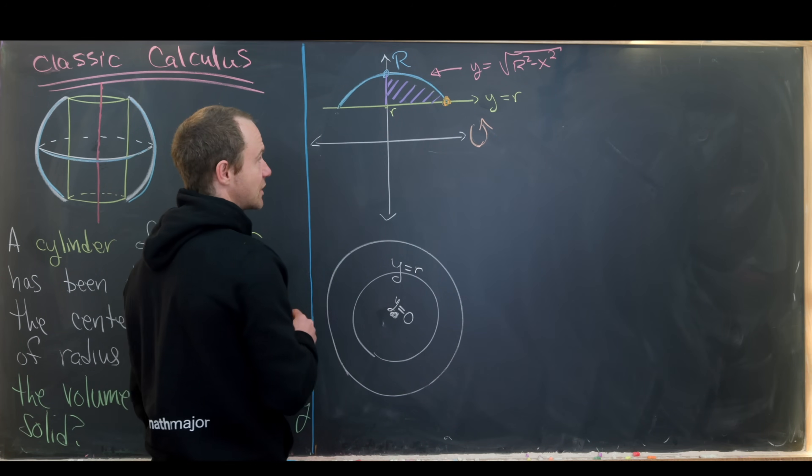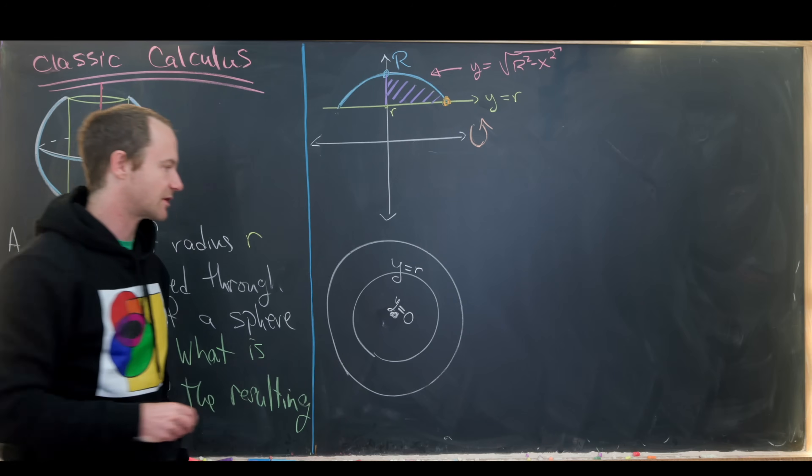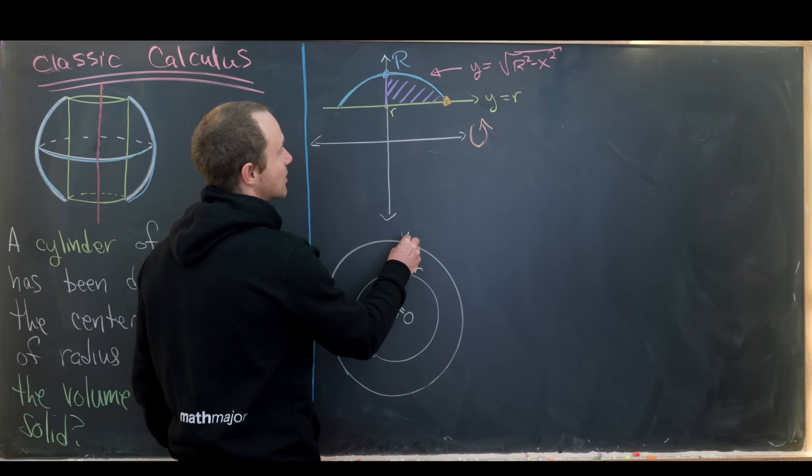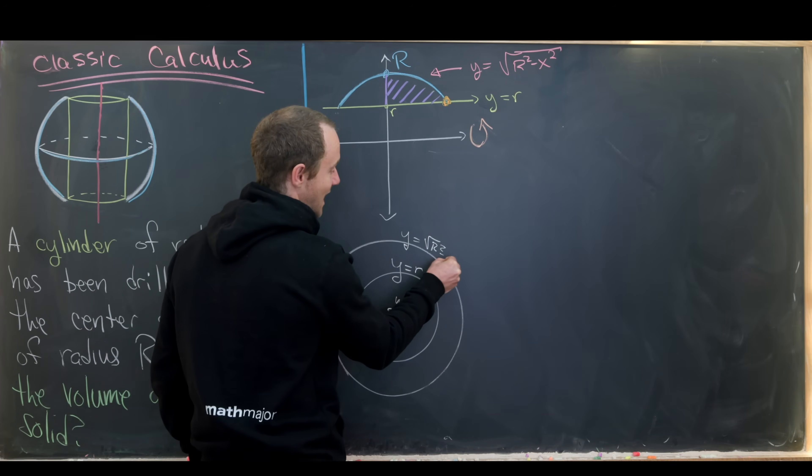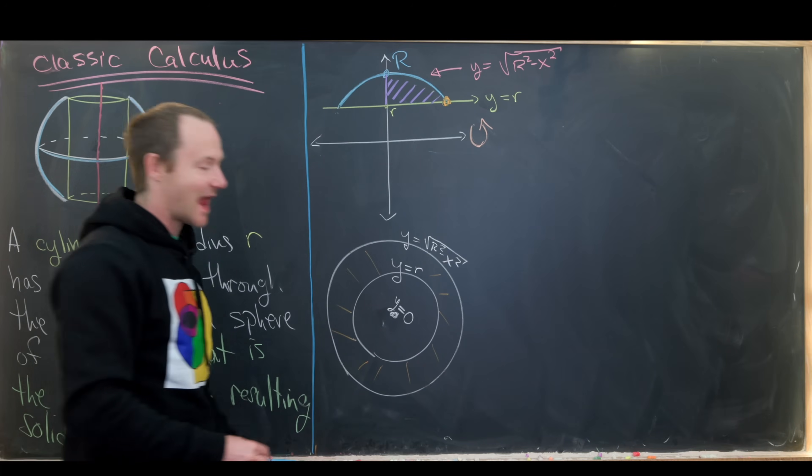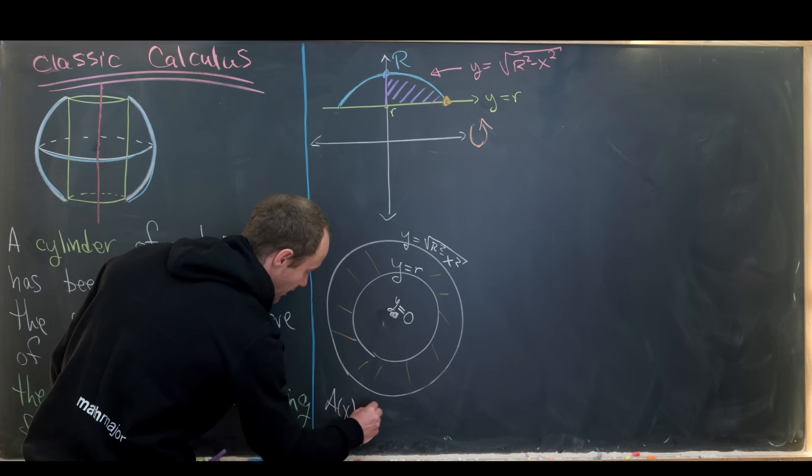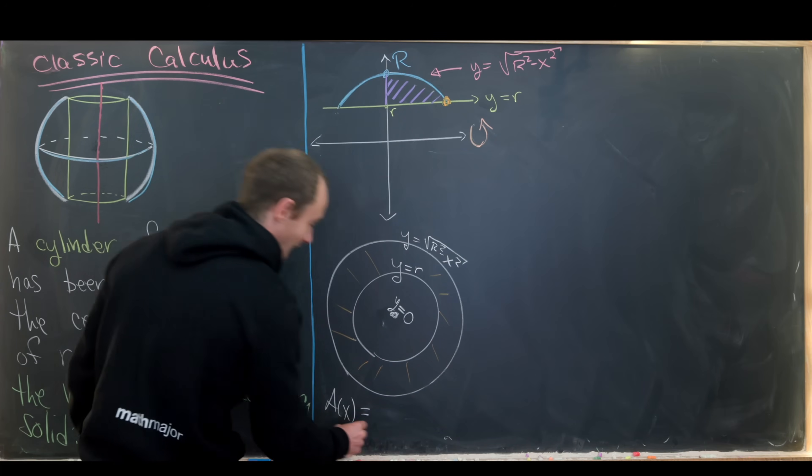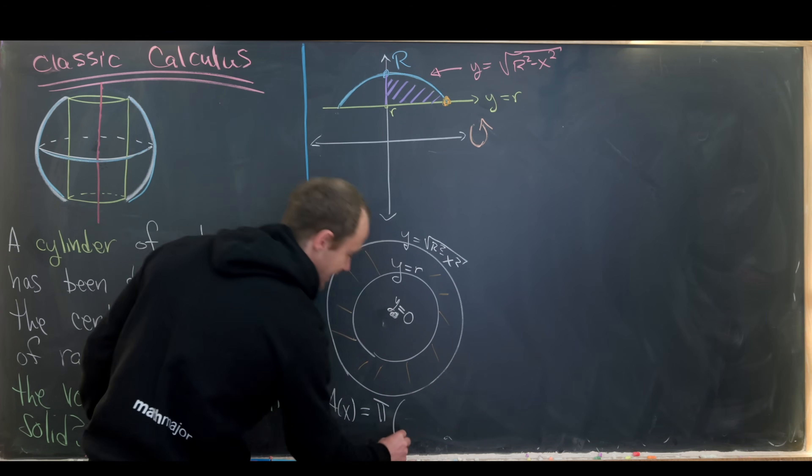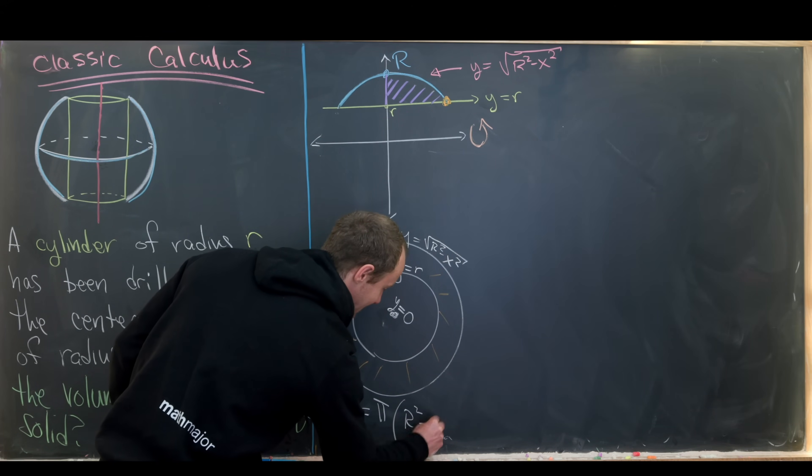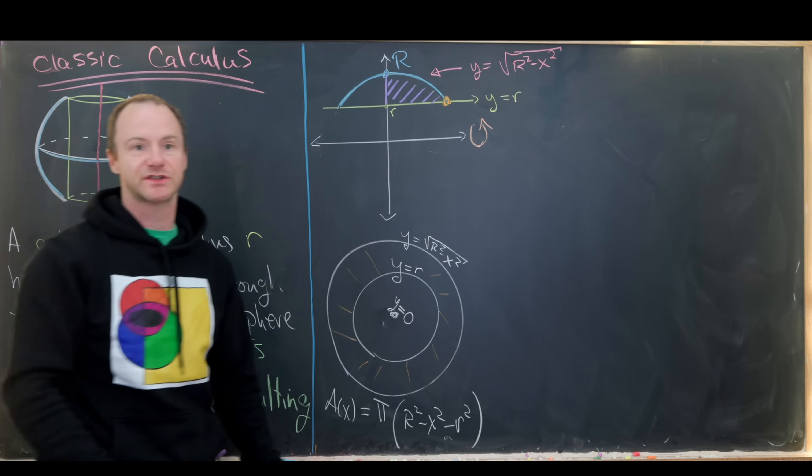And then the first curve that I encounter is y equals r. I know that's the first curve I encounter because if I stand along this axis and look out, I see the cylinder first. And this up here is y equals the square root of R squared minus x squared. So now this area component, which is a function of x, so I'll maybe call it A of x, can be described as pi times the outer radius squared. So the outer radius squared will be R squared minus x squared minus the inner radius squared. So that'll be little r squared.